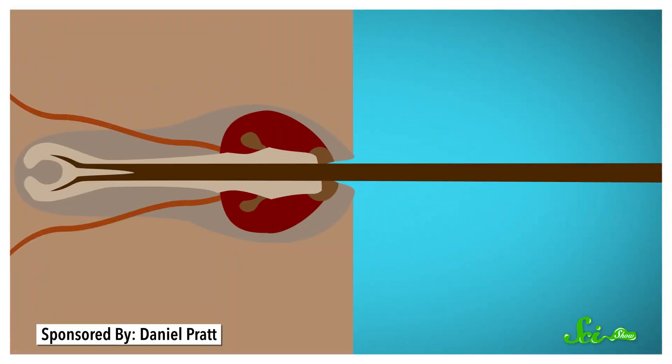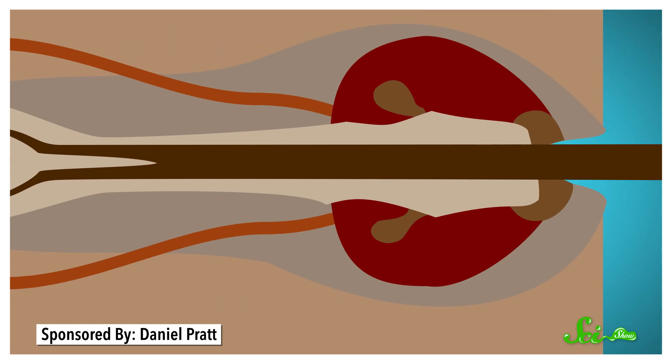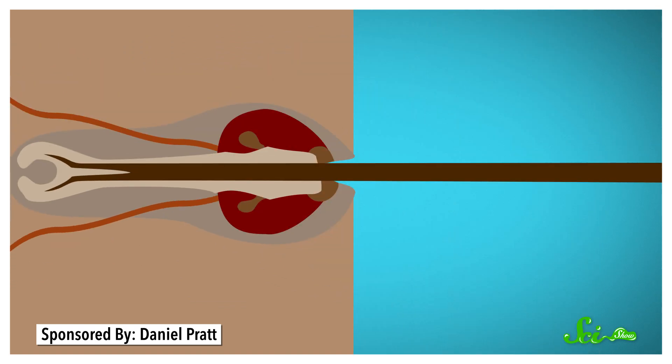The follicles for vibrissae are deep in the skin, and they're surrounded by pockets of blood which are connected to nerves. Researchers think that these pockets of blood help amplify any vibrations that come through the hairs to make them extra sensitive to touch.